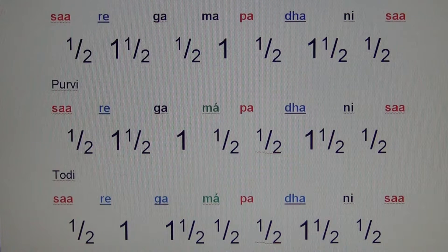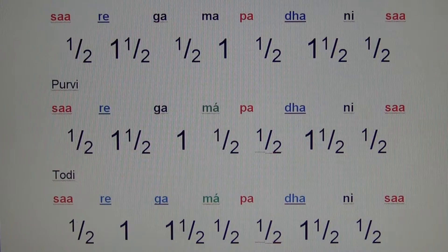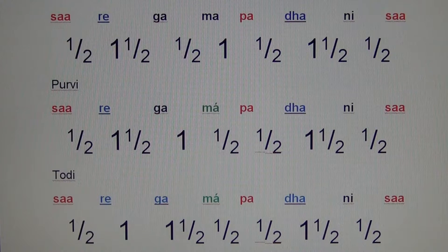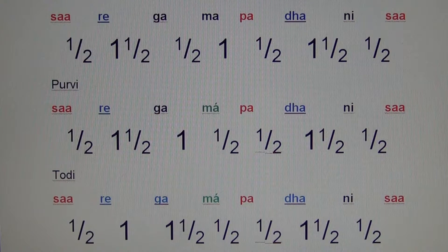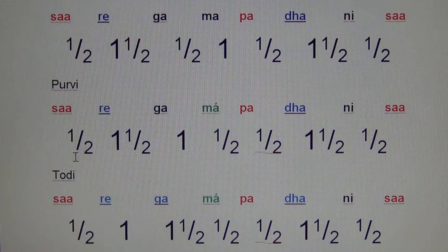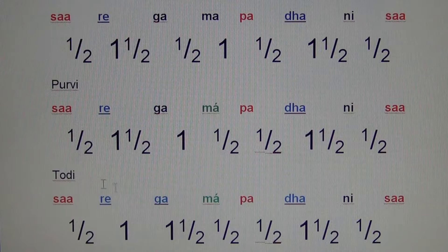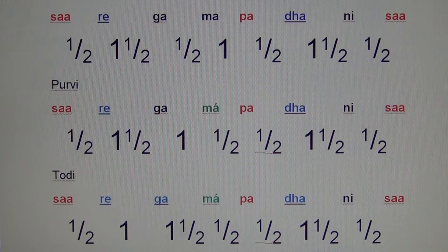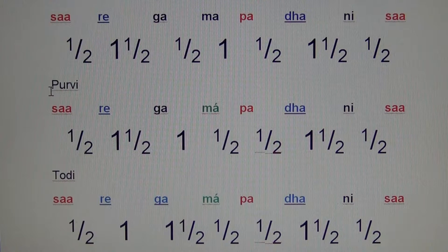Hello and welcome to lesson 409 in our continuing series on Indian Thaats or musical scales. Today we will be doing the Thaat Todi, and I have shown here the prior two Thaats that we have done — Bhairav and Purvi.